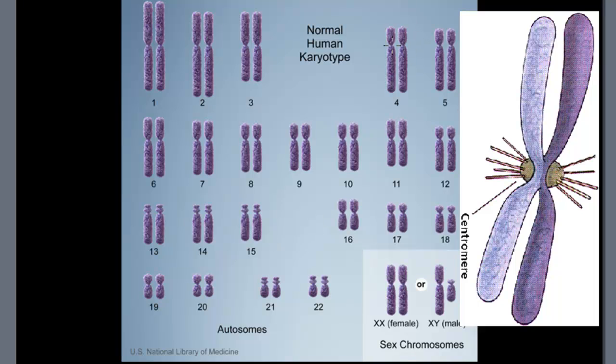What they try to do is they try to line them up on this centromere, this pinched-in section of the two sister chromatids, and then they match up the homologous pairs, or the homologous chromosomes, by size, shape, whatever else. And you can see there's set number one, and set number nine, and eighteen.